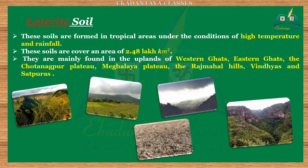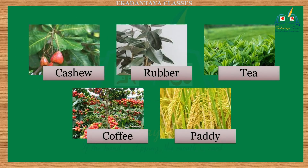Four: laterite soils. These soils are formed in tropical areas under conditions of high temperature and heavy rainfall. They cover an area of 2.48 lakh square kilometers. They are mainly found in the uplands of the Western Ghats, Eastern Ghats, Chota Nagpur Plateau, Meghalaya Plateau, Rajmahal Hills, Vindhyas, and Satpuras. They are leached soils, not fertile, and of limited use for agriculture. Crops like cashew, rubber, tea, coffee, and paddy can be grown in these soils.